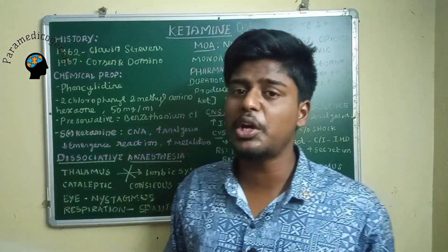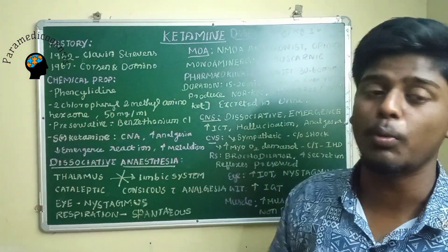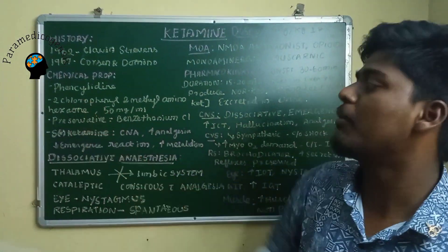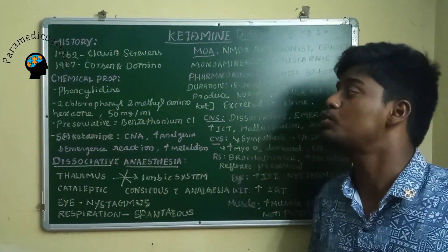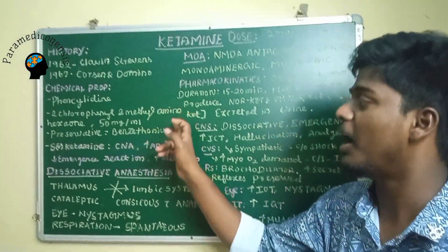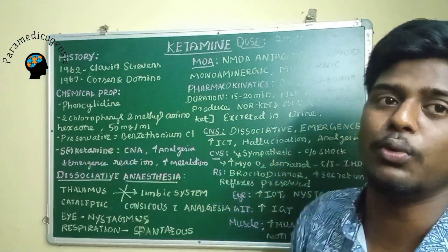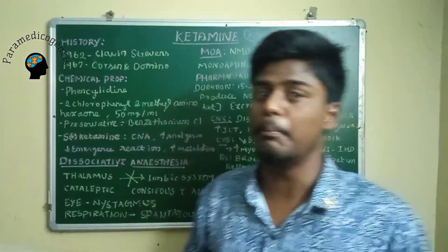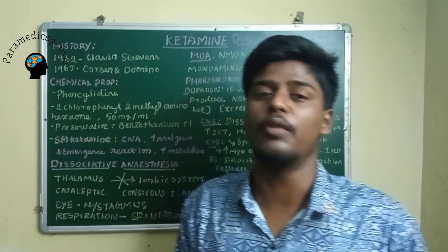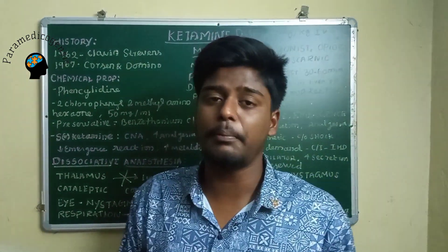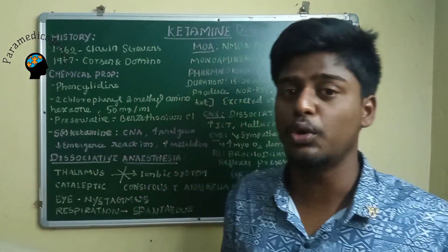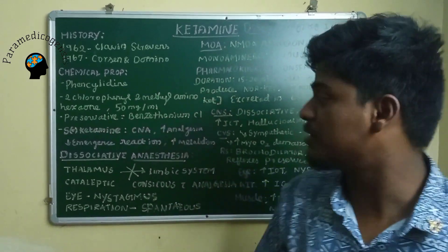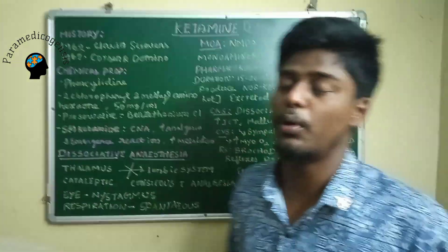The chemical property of ketamine: it belongs to the group of benzycline derivatives. The chemical name of ketamine is 2-chlorophenyl-2-methylaminocyclohexanone. It is available in 50 mg per ml multidose vials. As it is available in multidose vials, it contains a preservative called benzalkonium chloride.